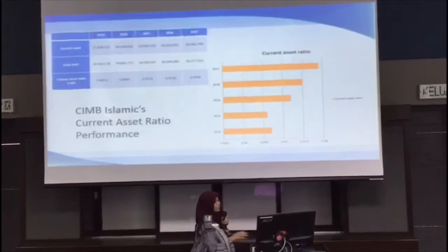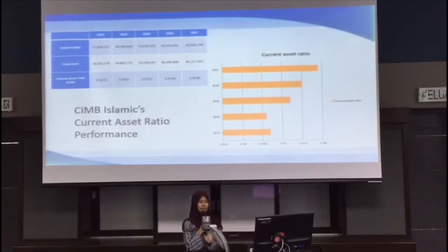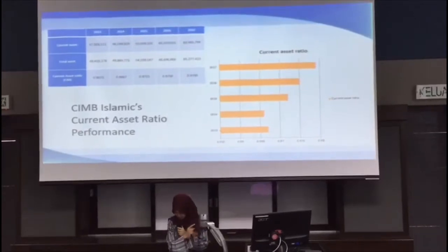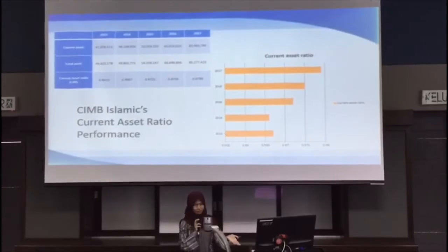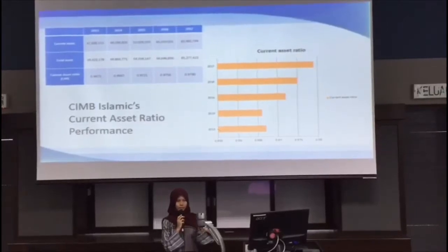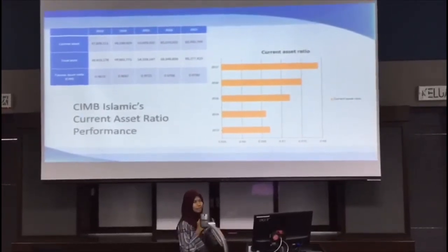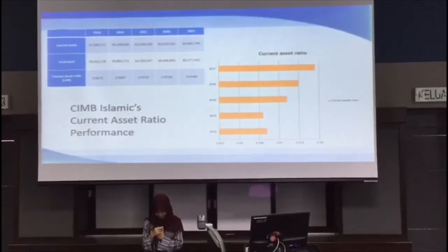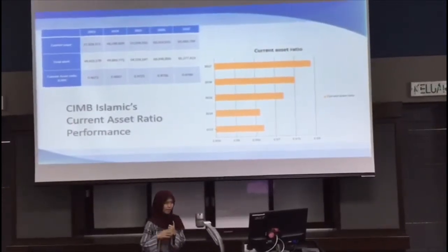The formula for current asset ratio is current assets divided by total assets. From the bar charts of CIMB Islamic's current asset ratio performance, we can see that the highest current asset ratio was in the year 2017. Among the five years of comparison, there has not been a big difference between the years.